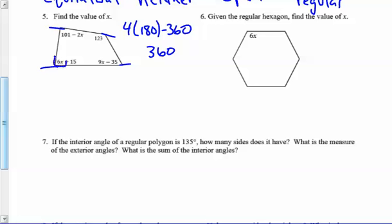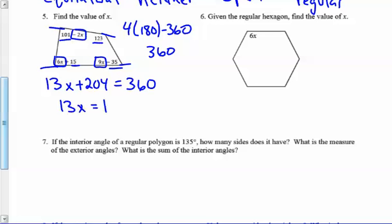So when I go around here, 6x minus 2x plus 9x, that gives me 13x. When I do 15 plus 101 plus 123 minus 35, I get 204. I add that together to get 360, and that gives me, when I solve it, 156 for 13x. So 1x will equal 12.